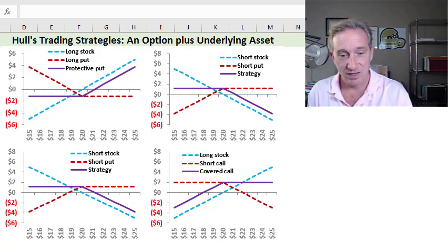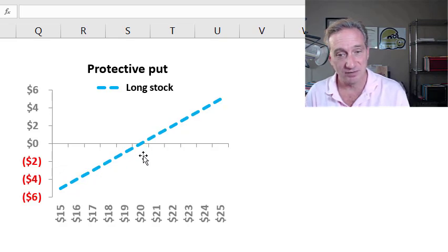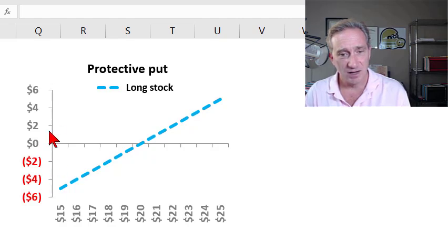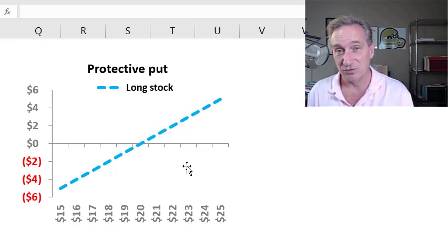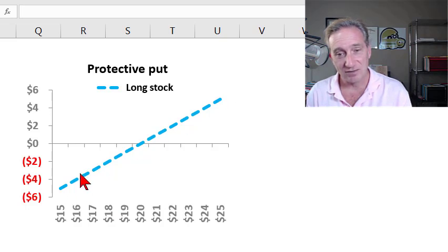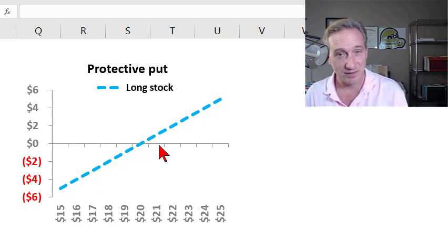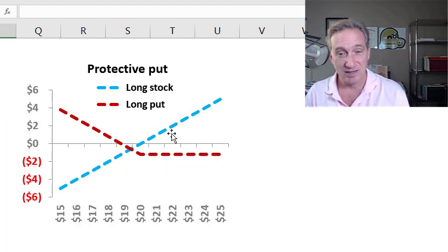Okay, so with those two definitions, then we look at the first strategy here, which is the protective put. And we have a long stock position. You'll notice it crosses the y value of zero here at about $20. That's because I've assumed in all of my examples that we purchased the stock at $20. And also to keep it simple, that the strike price of any of the options is $20 as well. This 45 degree upper line is a classic plot of the profit on a long stock position. And then if we add the long put, here is the profit, not the payoff of that long put. We would gain if we purchase the put here, we would be profitable at lower future stock price values.